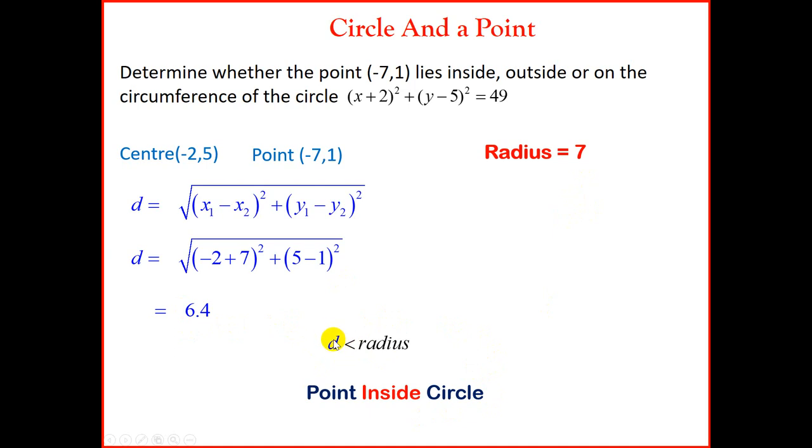And in the last case, if d was bigger than the radius, let's suppose we got 10, then 10 is greater than 7, then that point will lie outside. But in this case, we can conclude that the point lies inside the circle.